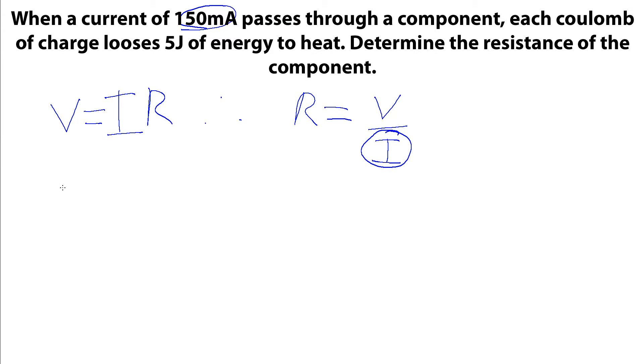So we know from a previous video that the work done by some voltage is given by that voltage times the charge that that acts on, which gives us voltage is work done per charge. And we're told that each coulomb of charge, so every one coulomb, is getting 5 joules of energy taken away from it. So we've got a potential difference with 5 joules per coulomb, which means 5 volts. So this 5 volts can now come up into here.